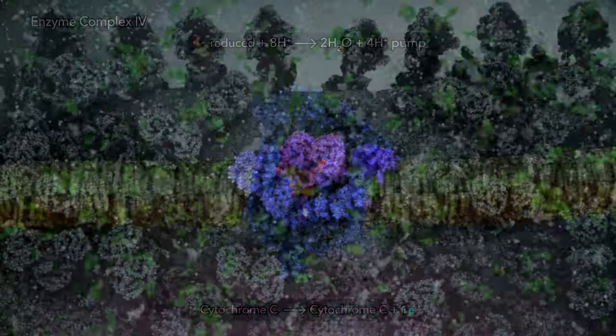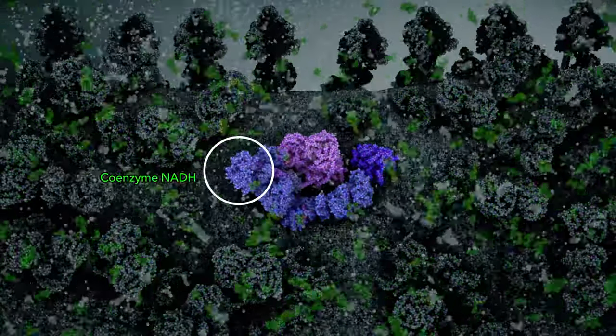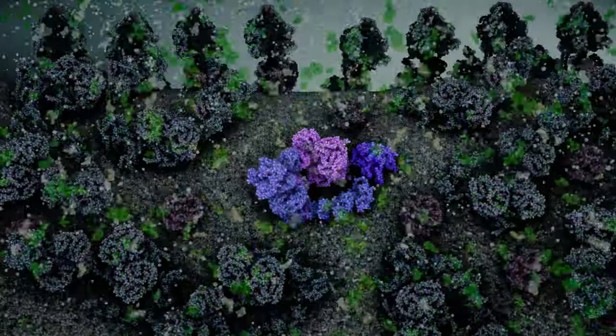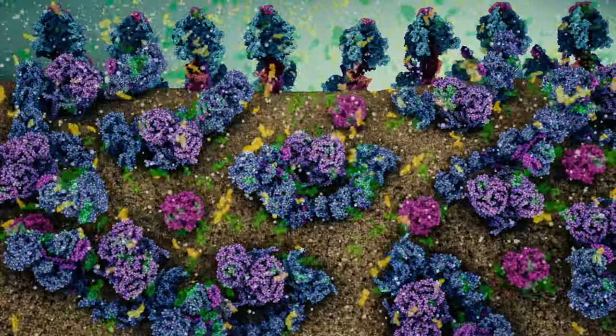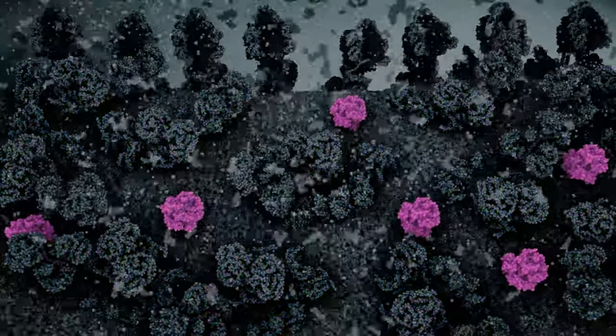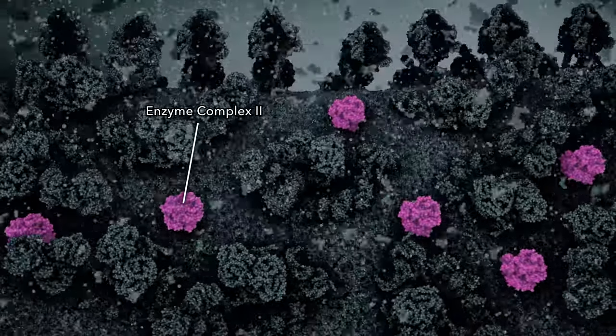The substrate providing electrons to enzyme complex 1 is coenzyme NADH, a product of the citric acid cycle. A second supply of electrons for the electron transport chain is from step 6 of the citric acid cycle, performed by enzyme complex 2.